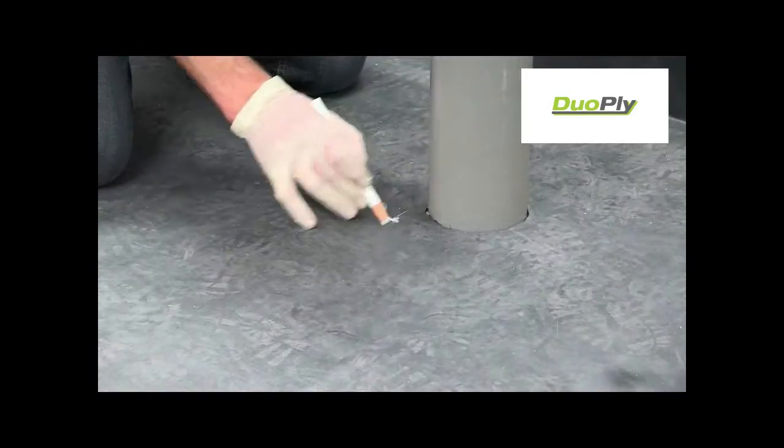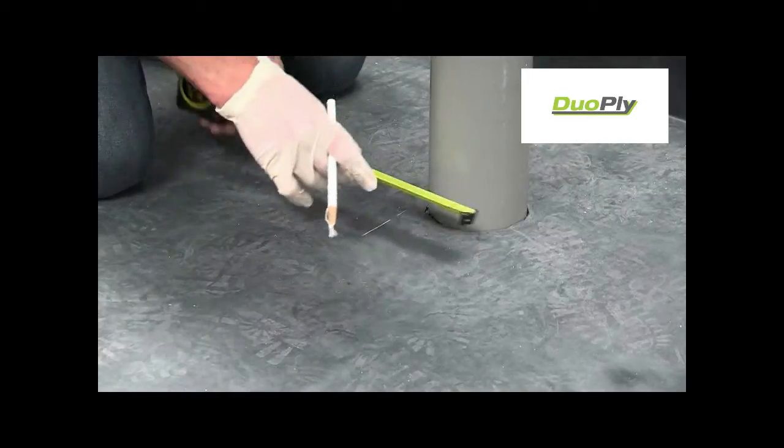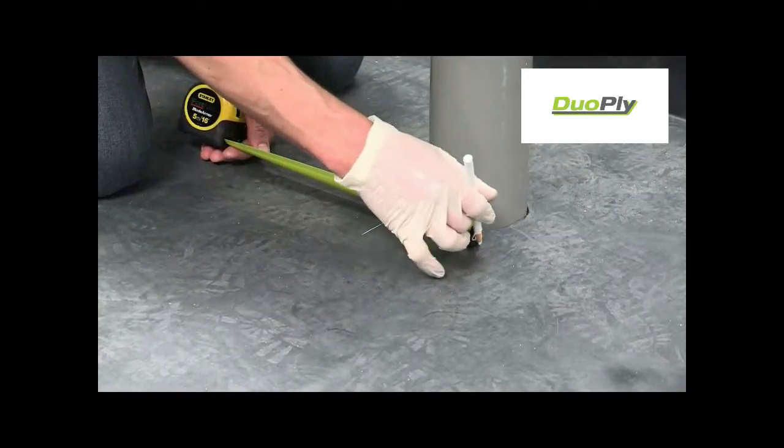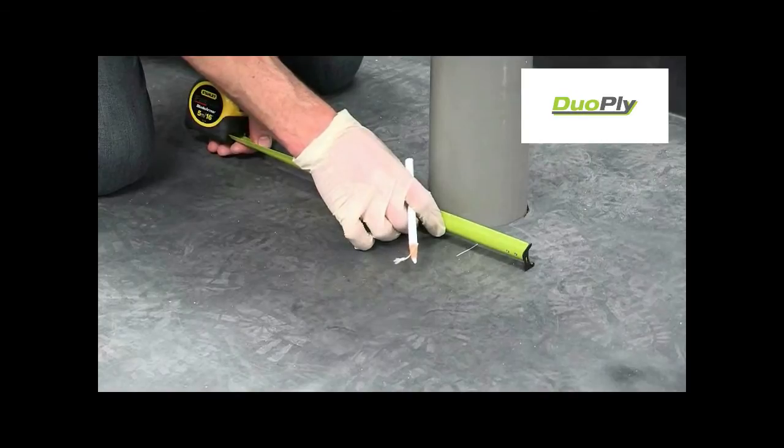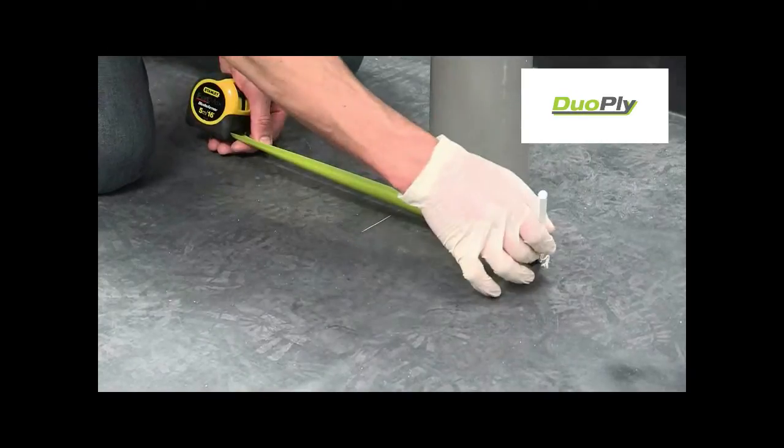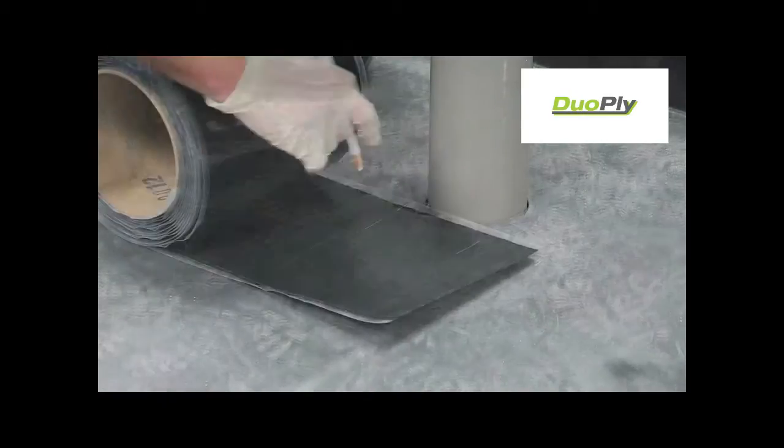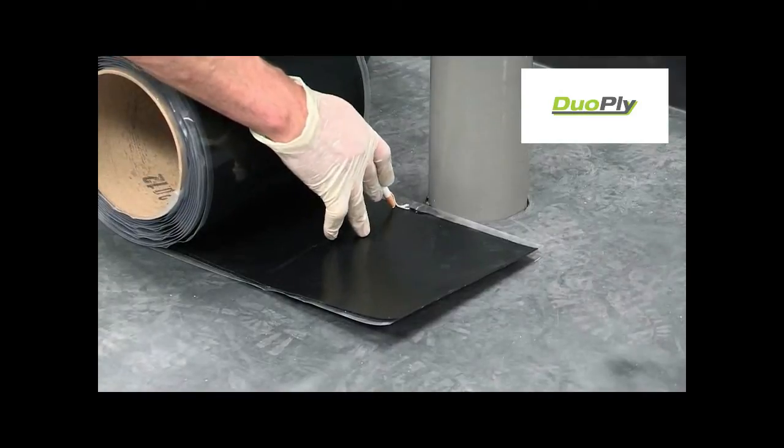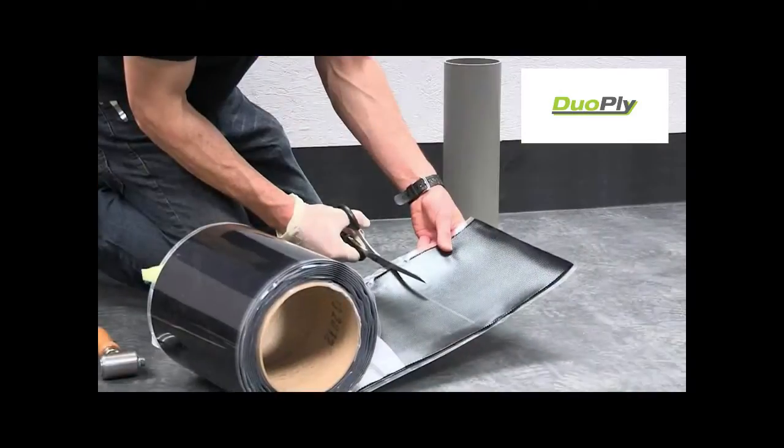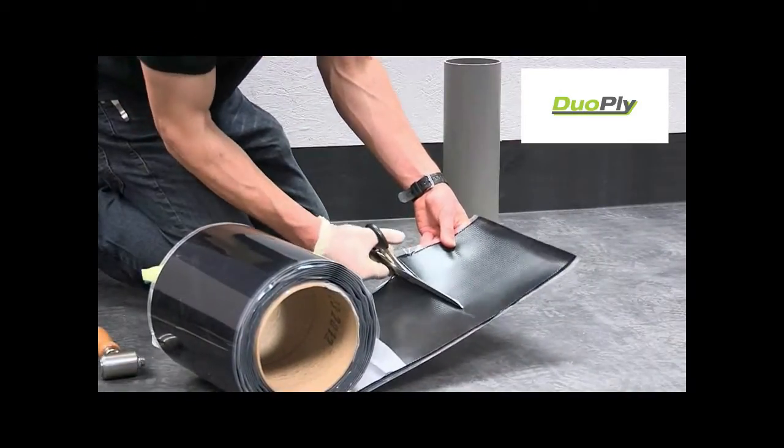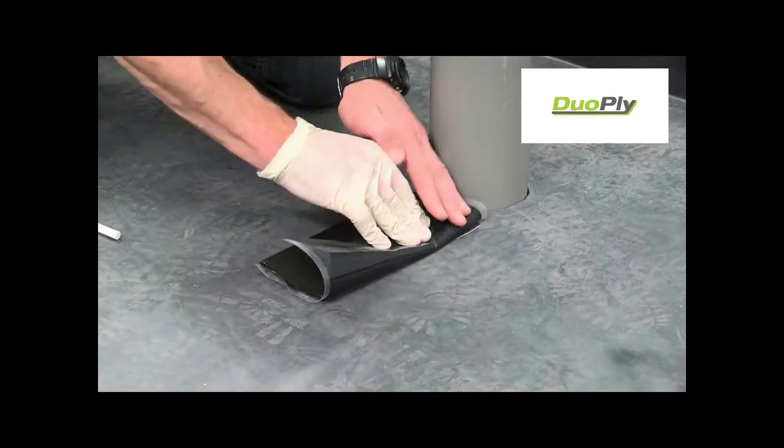To determine the size of the first tape, mark out the width of the pipe and add 75mm. The added 75mm extends to the front of the pipe.